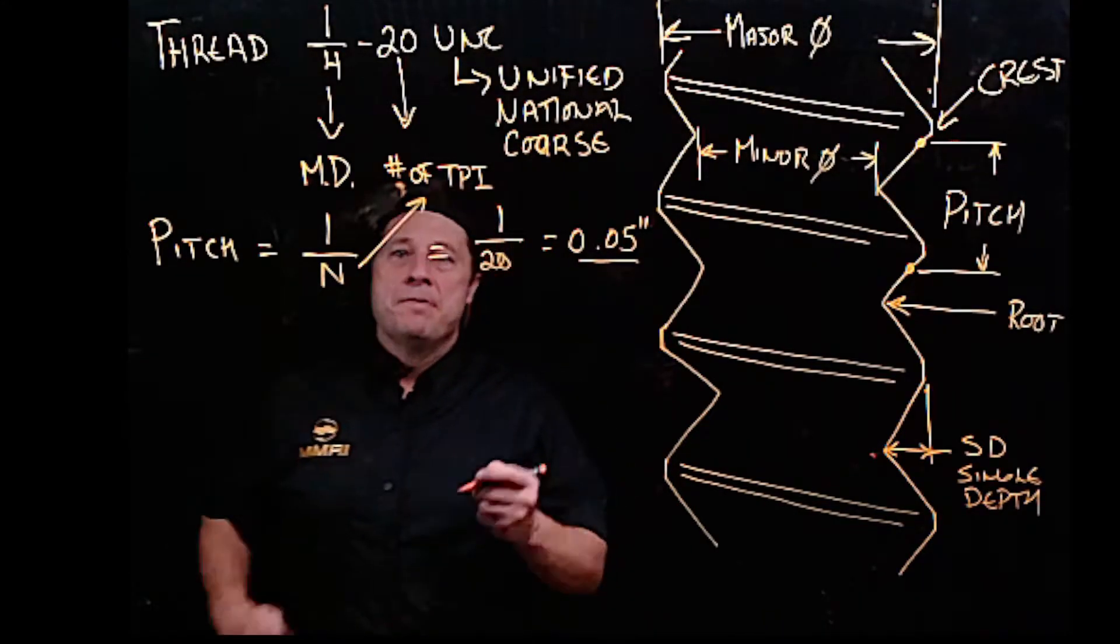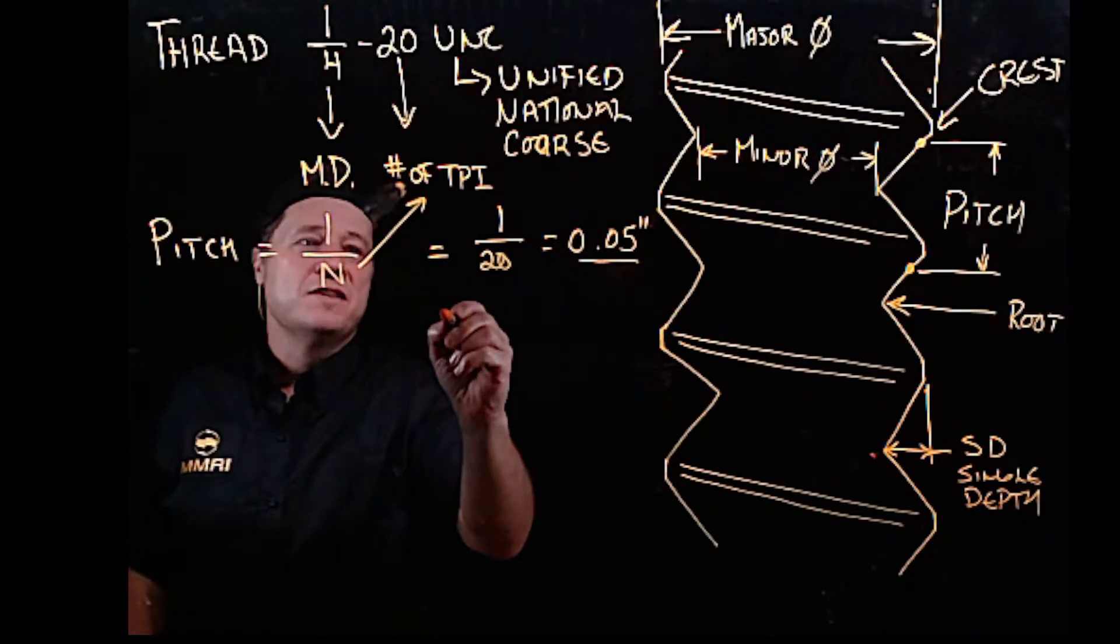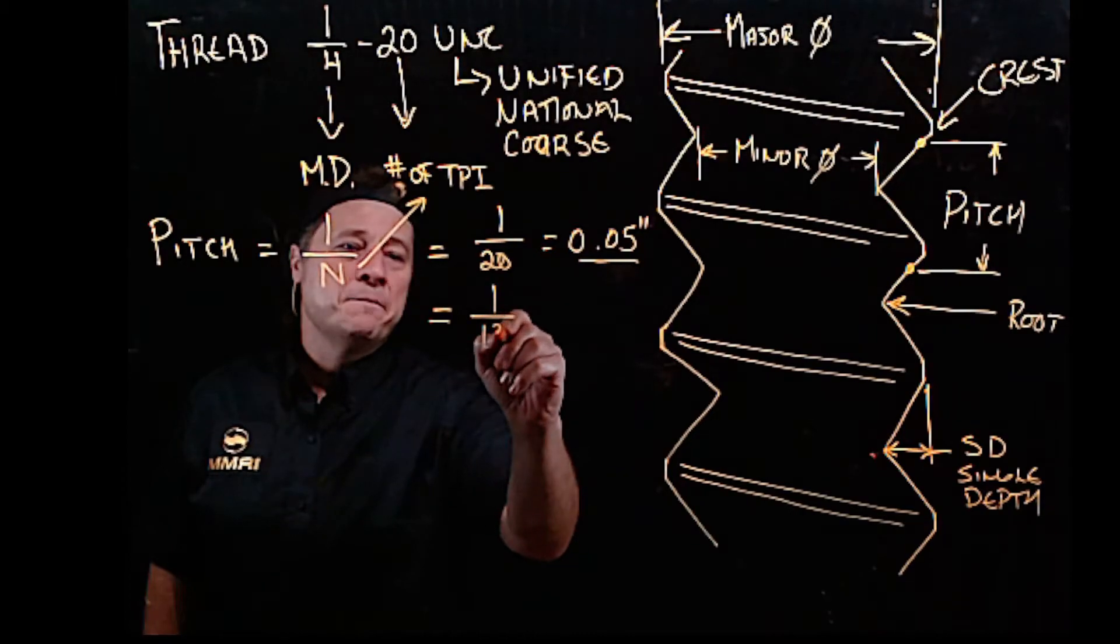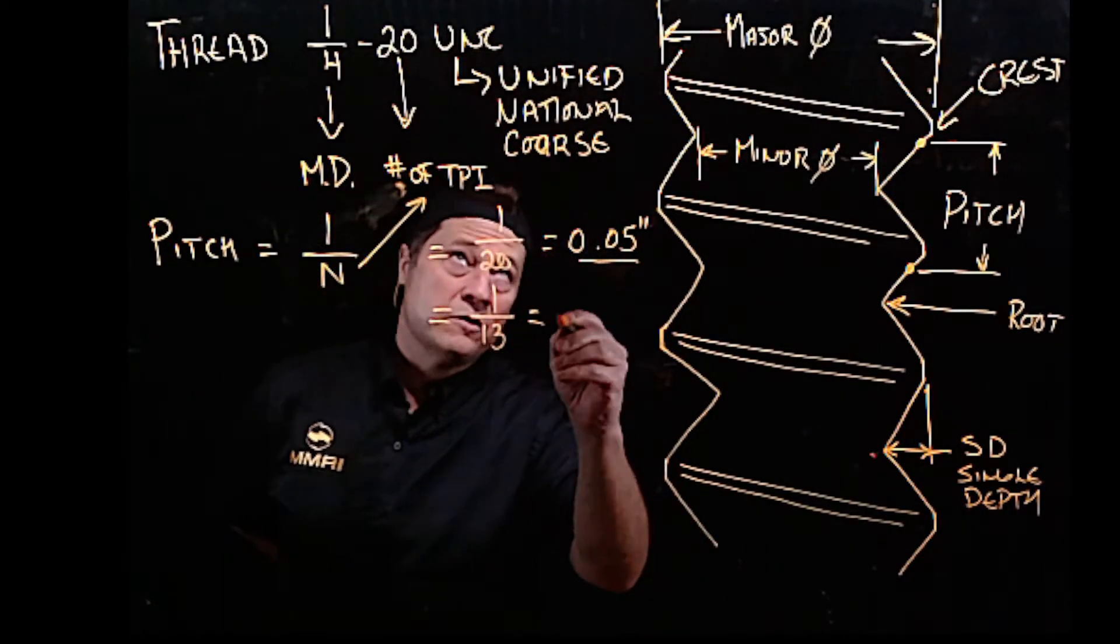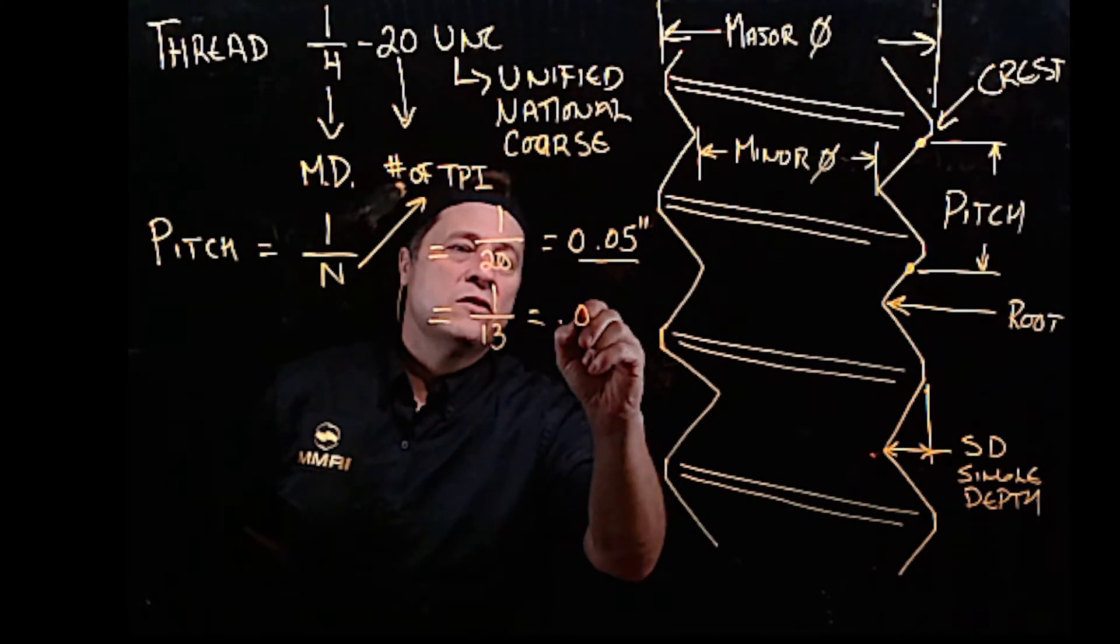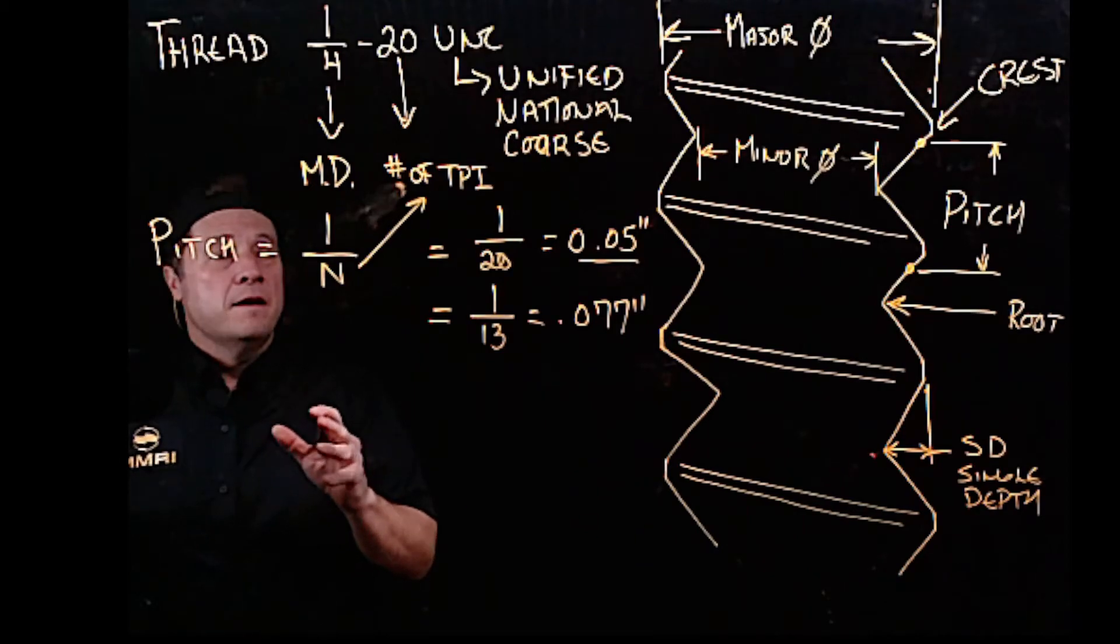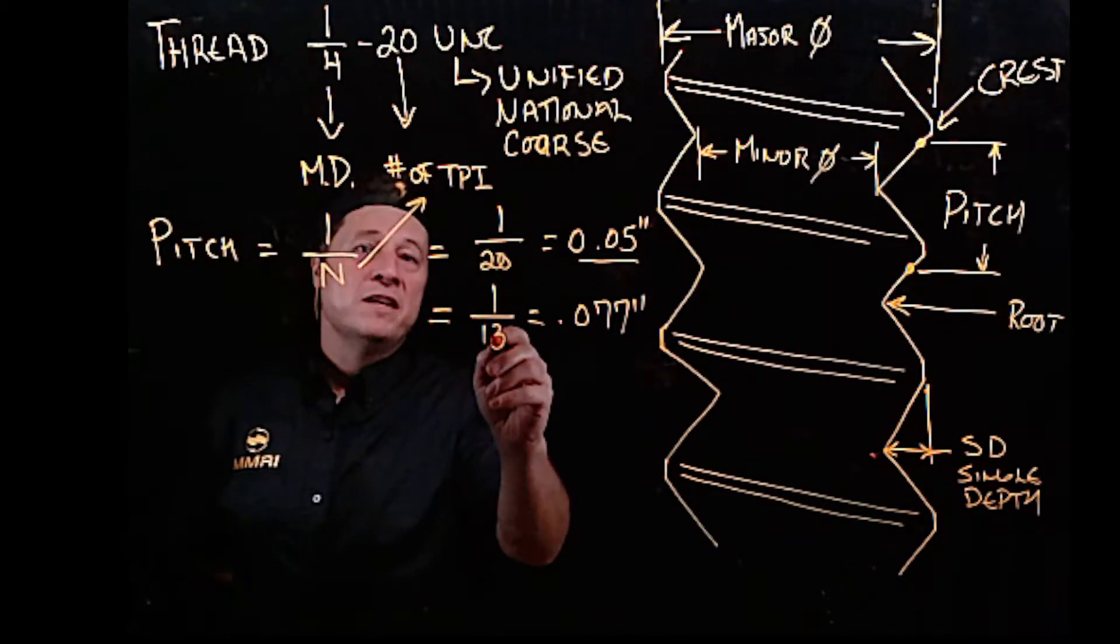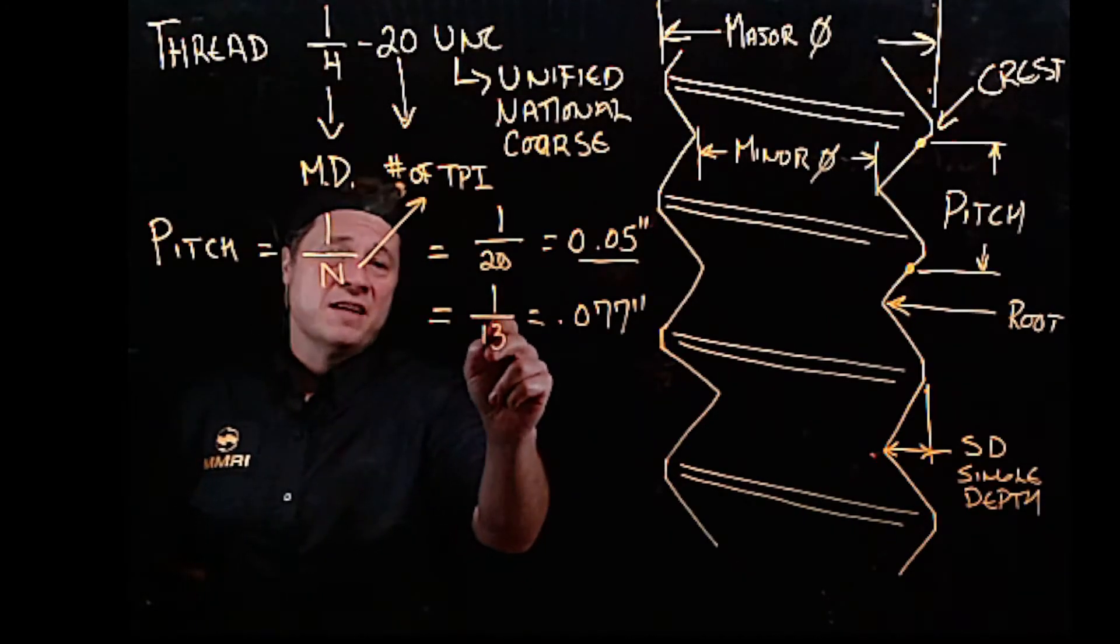What if I'm cutting a half-inch 13? What would my pitch be? 1 divided by 13 is 0.077. So for a half-inch 13, that's 13 threads per inch. The formula is 1 divided by the number of threads, so in this case it's 1/13.